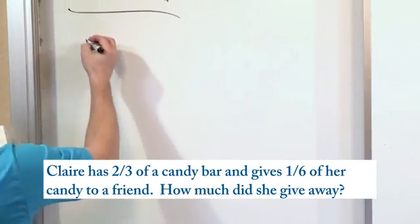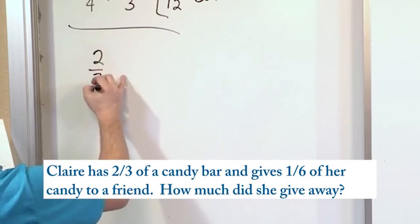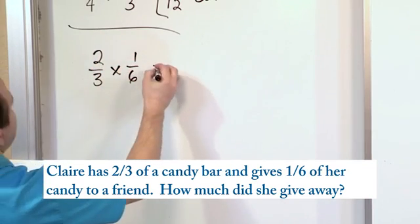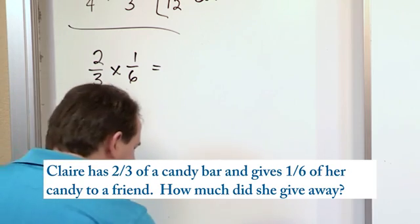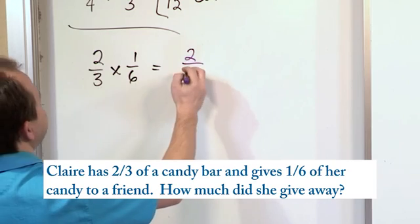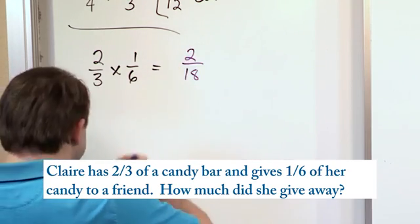In terms of math, what Claire has is 2/3 and she's multiplying by 1/6 because that's how she's chopping it down. We multiply the tops: two times one gives me two. We multiply the bottoms: three times six gives me eighteen. This is the answer.